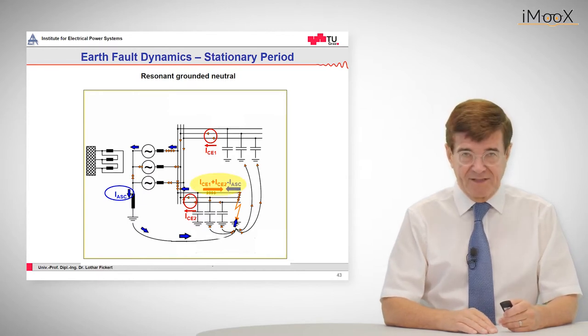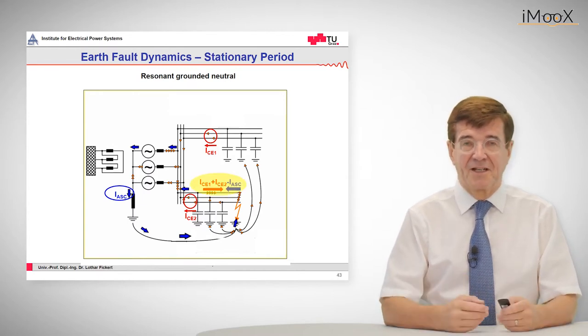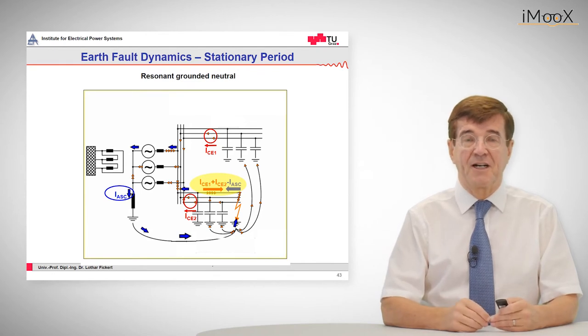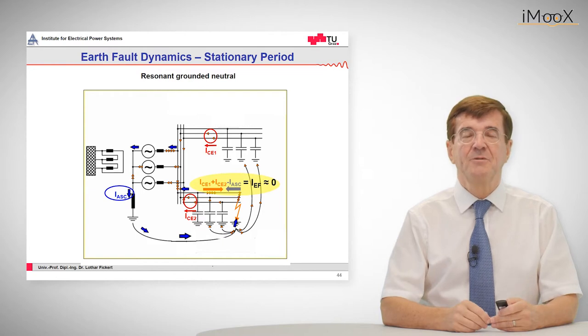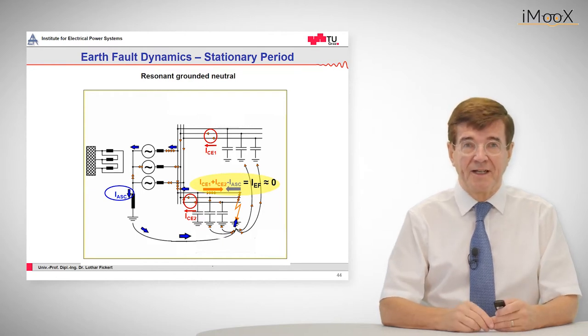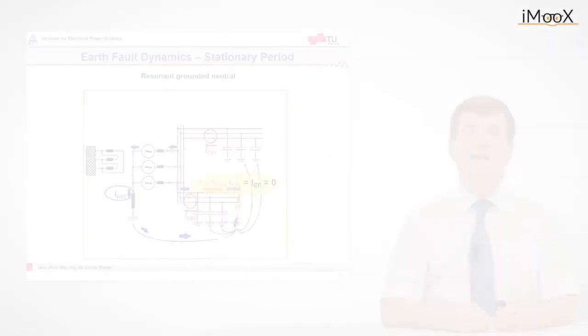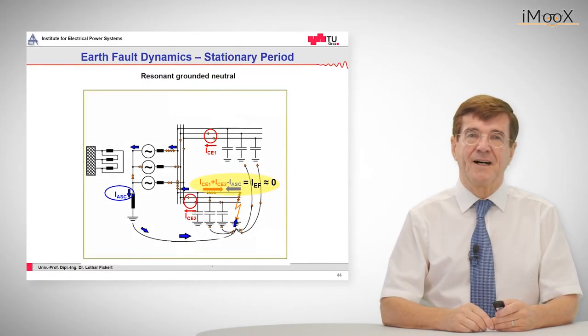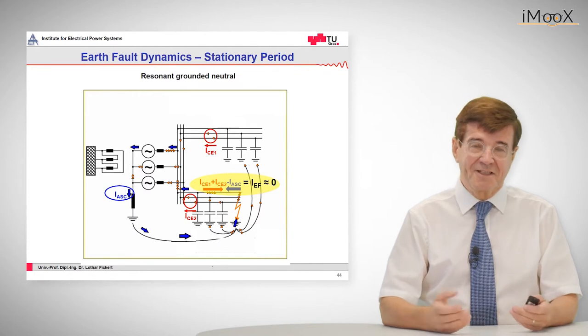So these currents add up and if this is done cleverly, through tuning of this arc suppression coil, the resulting current is more or less zero, which has the beneficiary effect that an arc, which is burning in air, may extinguish. So this is the reason why this arc extinction coil is called extinction coil.